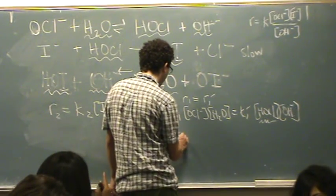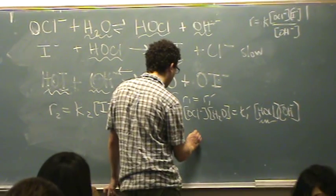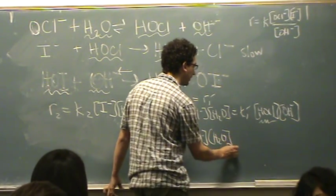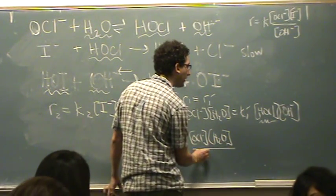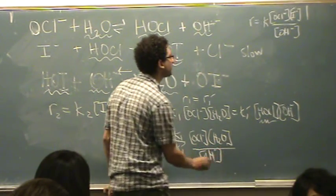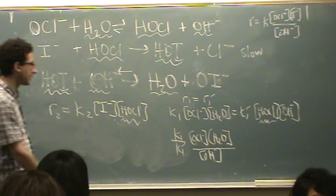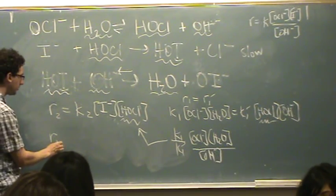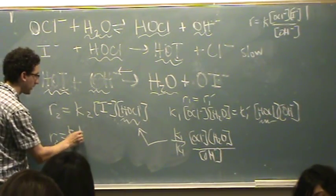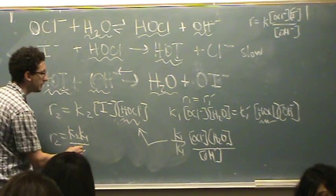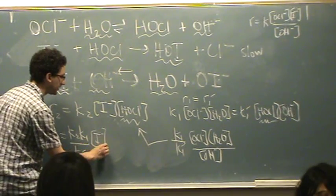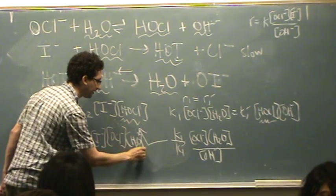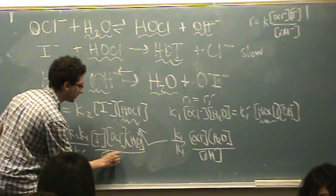So K-1 over K-1 prime O-C-L minus times H2O all over O-H minus. I'm going to plug this in there. For some reason, I think I have extra water here. R-2 equals K-2 K-1 over K-1 prime I minus O-C-L minus. I have water in here. I'll figure out what to do with that. Water over O-H minus.